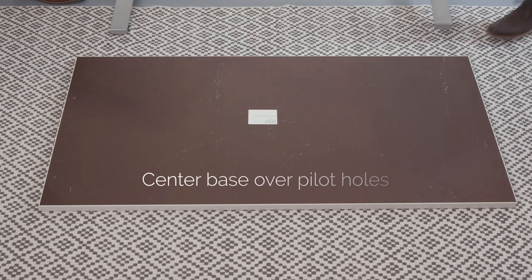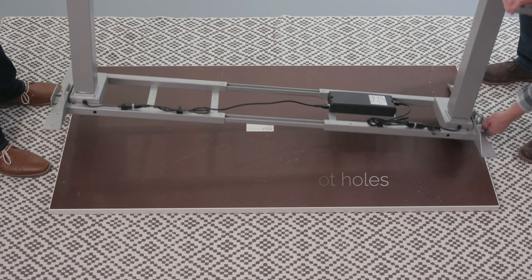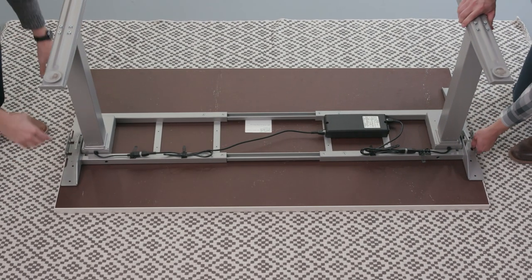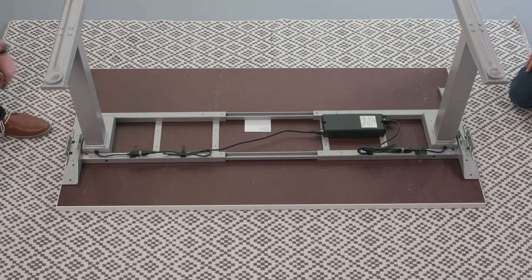Place your tabletop down on a soft, clean surface. Lift and place the base onto the table. Check that the top supports on each side are flush with both ends of the desk. Refer to your manual for spacing requirements.